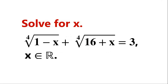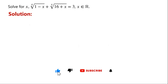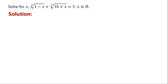Solve this radical equation where x is a real number. A usual way to solve a radical equation like this is to remove the radicals by raising the equation to the power of the index. However, for the given equation, if we raise the equation to the power of 4, the resulting equation becomes more complicated. So we will use a different method to solve this radical equation.